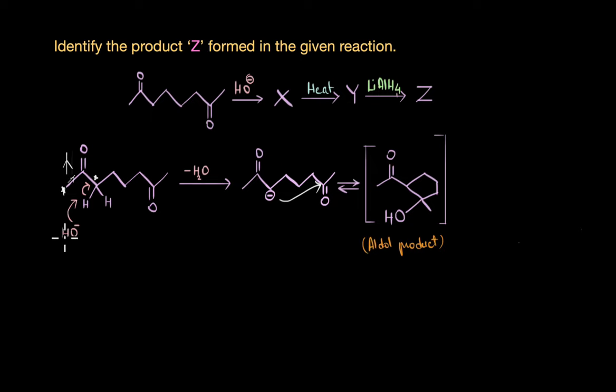If the hydroxide ion had abstracted the hydrogen atom from this alpha carbon, in that case we would have gotten a ring which is seven-membered and not a five-membered ring. Because a five-membered ring is more stable than a larger ring like a seven-membered ring, OH- prefers to abstract hydrogen from this alpha carbon instead of the other alpha carbon.